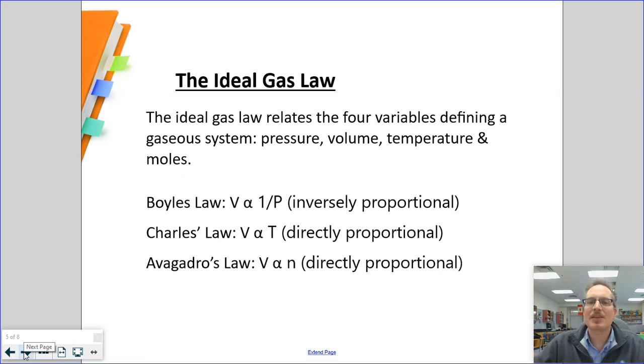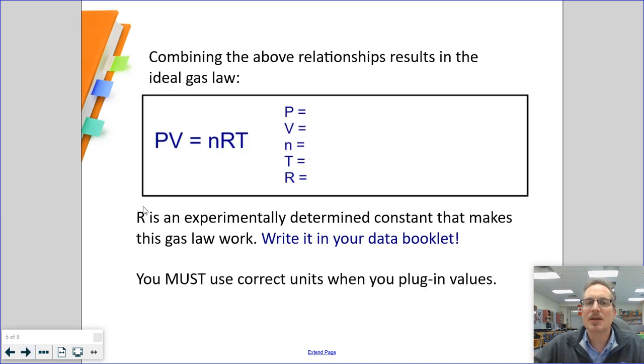The best part of the ideal gas law and why I love ending with it is, finally, after all these gas laws, we finally get a law where we combine all four key parts of a gas: pressure, volume, temperature, and moles into one formula, and we can talk about it in one space. So here is our new formula, PV equals NRT. It has to be memorized, but four out of the five of these variables you already know.